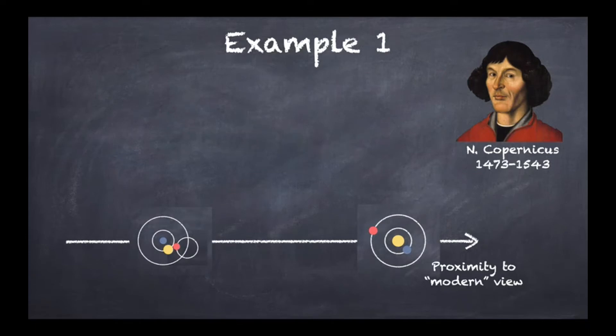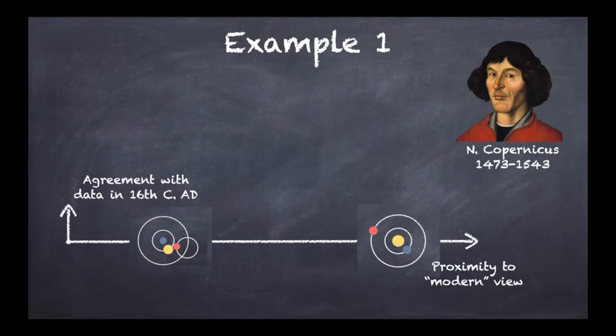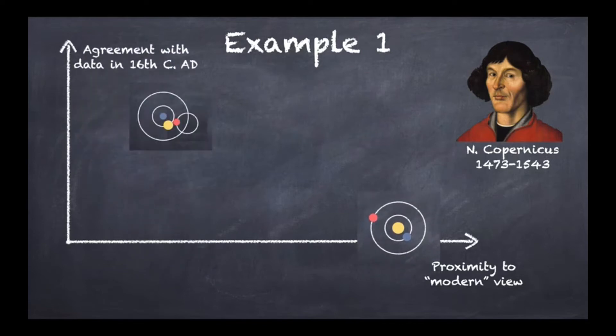Now if instead you also try to look at what was the agreement with data in the 16th century after Christ, then you would get something a little bit different. What happened here is that the Ptolemaic model was much better at agreeing with data than was the Copernican model. But of course, Copernicus had many other reasons to believe that his model was a correct one and was metaphysically correct.